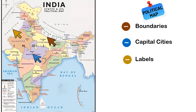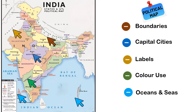Third element, labels — names of countries, states, and capital cities are clearly marked. Fourth is color use — different colors are used to distinguish between different countries, with each political entity usually filled in a unique color to prevent confusion and clearly show the different states. Fifth, oceans and seas — major bodies of water are typically included and labeled, though they are secondary to the political boundaries.